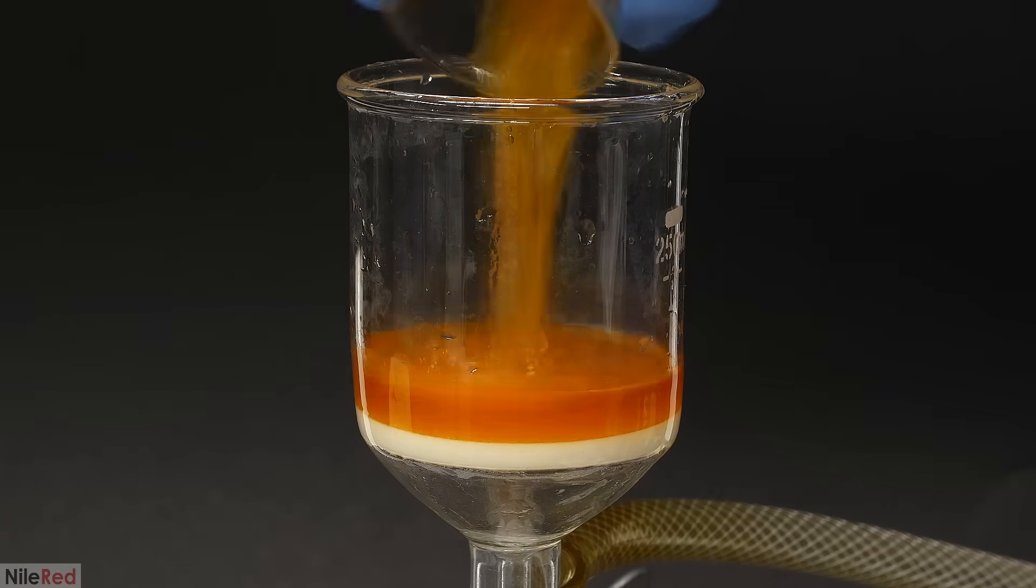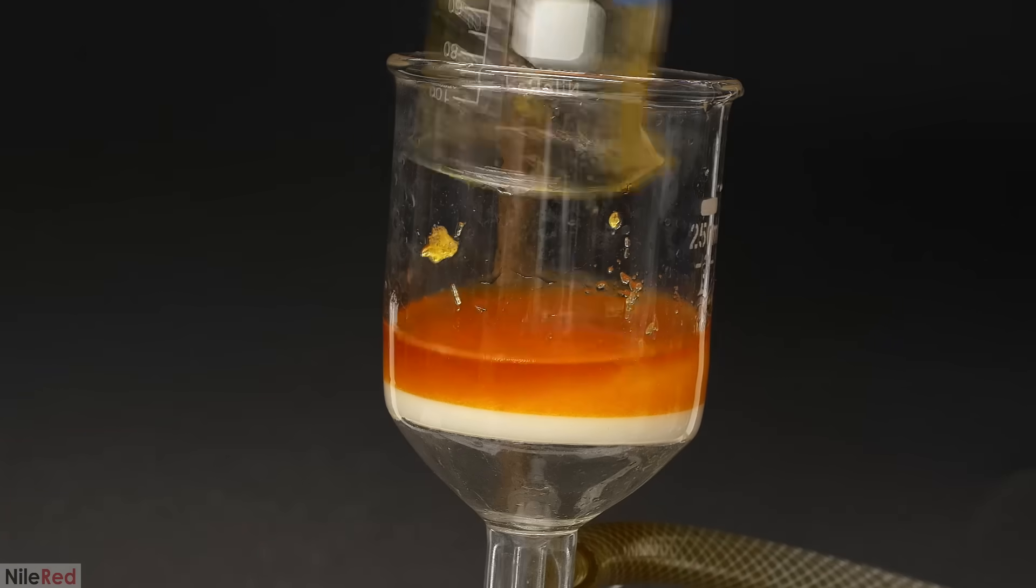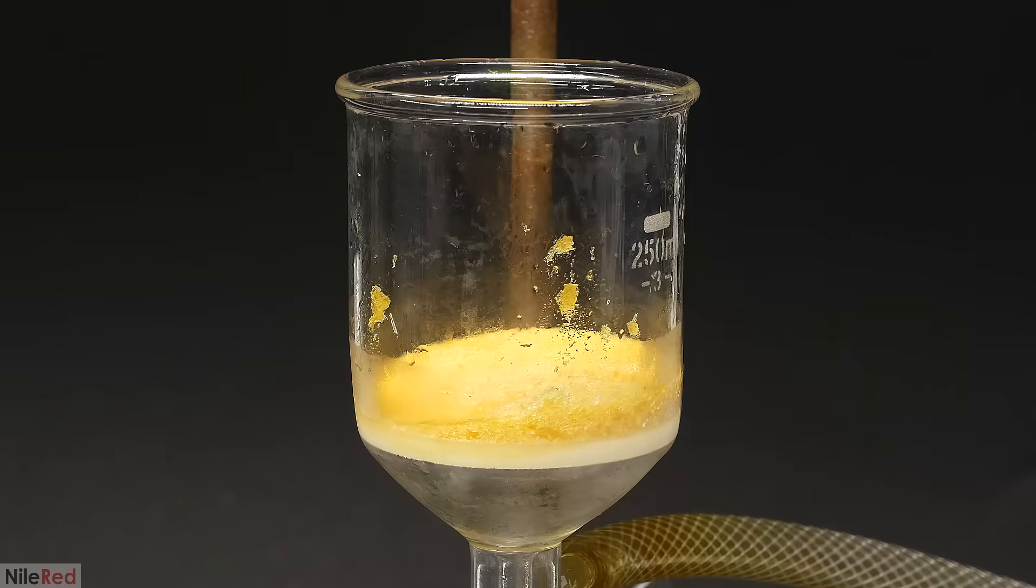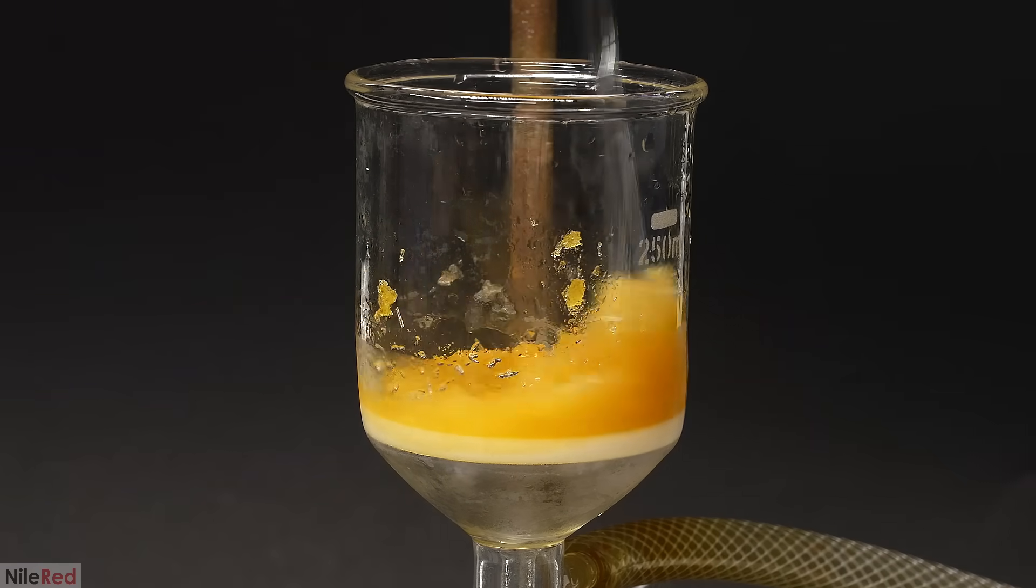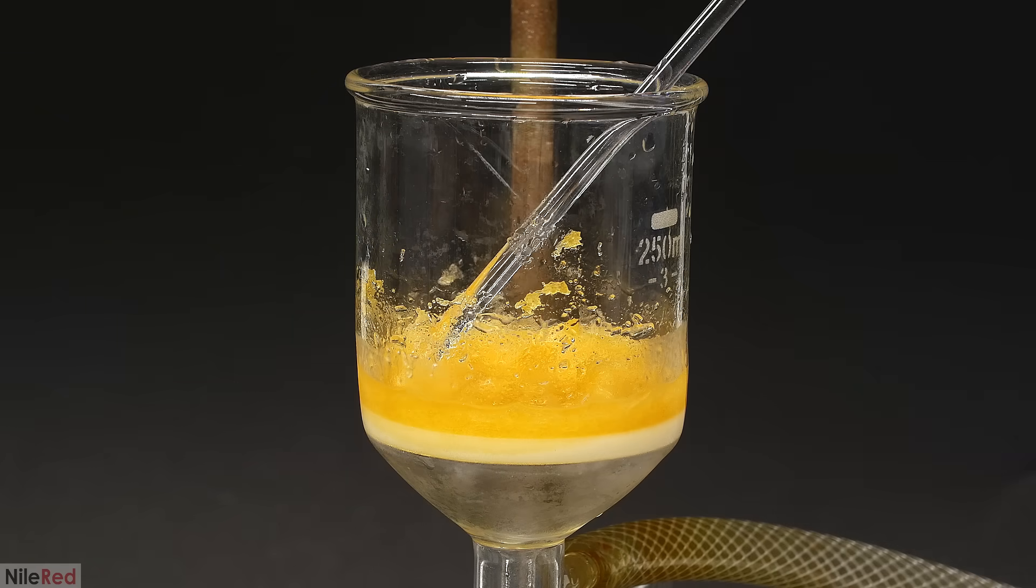Then, just like we've seen before, I break everything up and filter it off. After everything is pulled through, I wash it a couple times with some ice-cold ethanol to try to get rid of the color.